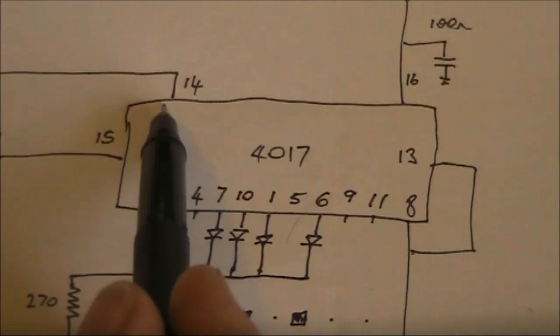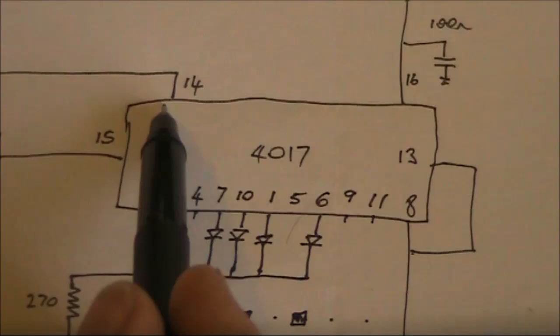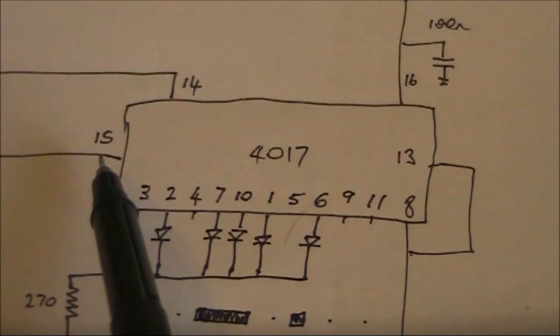Also worth mentioning is pin fourteen, which is the clock input. Without a clock, the 4017 will not switch between each of the positions, and is therefore useless. Pin number fifteen resets the counter to the start, in this case, pin number three.